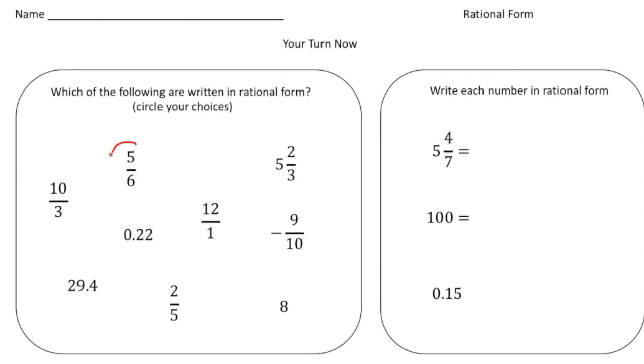So 5 sixths is a fraction, so that's written in rational form, so is 10 thirds. And 5 and 2 thirds, well that's a mixed number, so it's not. Negative 9 tenths is in rational form. 12 over 1 is in rational form. 0.22 is not. If that was 22 hundredths as a fraction, then you would. 29 and 4 tenths is not. 2 fifths is in fractional form. And the number 8 by itself is not.